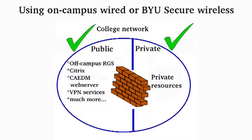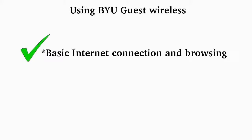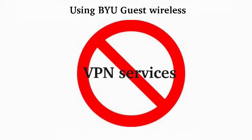When on campus, by either physically plugging in your computer to the BYU wired network, or by using the BYU secure wireless network, you will have access to both the public-facing and private college resources. There is no need to use the VPN when using either an on-campus wired or BYU secure wireless connection. All the public and private resources are already available. Currently, using BYU Guest Wireless, you will not be able to access any of the public or private college resources. BYU Guest Wireless supports basic internet browsing only and does not currently support college VPN services.